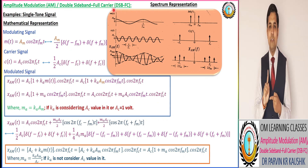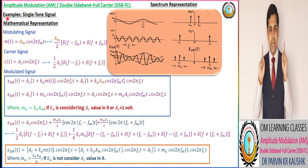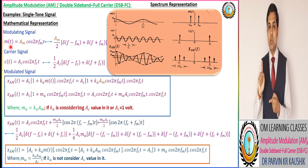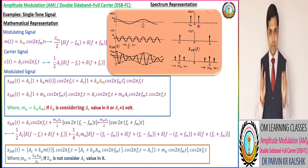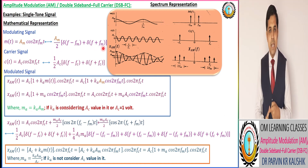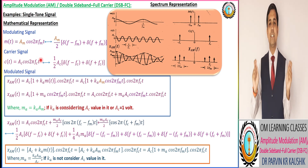Now we have the example of a single tone signal. Single tone signal means the modulating signal contains one frequency component. Here, the modulating signal am(t) is equal to Am cos(2π fm t) and their corresponding frequency domain representation is X. We also have the carrier signal Ac cos(2π fc t) and their frequency domain representation is X.